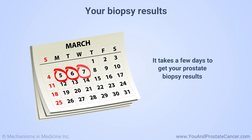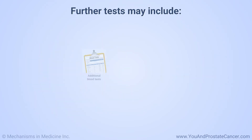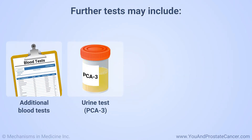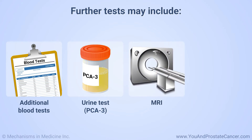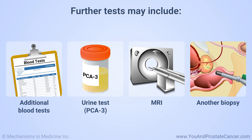It takes a few days to get the results of your prostate biopsy. If the biopsy results show no cancer, your doctor may order further tests. These can include additional blood tests, a urine test called PCA3, an MRI to look for abnormalities on the prostate, or a repeat biopsy.